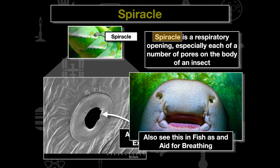It's also important to understand that spiracles are found on fish as well. Fish that live in low-oxygenated areas also use spiracles as an aid for breathing. This is essentially the opening that allows insects to breathe — they don't breathe through their mouth like other organisms; they breathe via these spiracles.